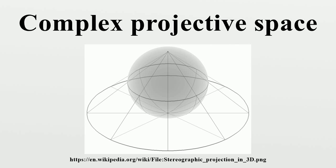The notion of a projective plane arises out of the idea of perspective in geometry and art — that it is sometimes useful to include in the Euclidean plane an additional, imaginary line that represents the horizon that an artist painting the plane might see. Following each direction from the origin, there is a different point on the horizon, so the horizon can be thought of as the set of all directions from the origin. The Euclidean plane, together with its horizon, is called the real projective plane, and the horizon is sometimes called a line at infinity.